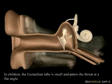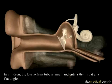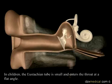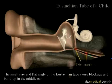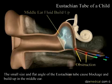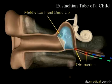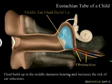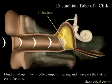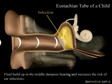In children, the eustachian tube is small and enters the throat at a flat angle. The small size and flat angle of the eustachian tube cause blockage and buildup in the middle ear. Fluid buildup in the middle ear dampens hearing and increases the risk of ear infections.